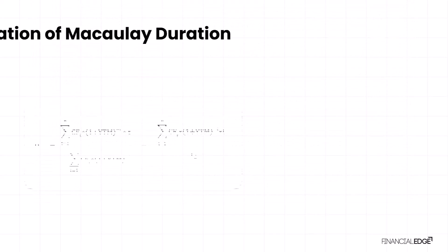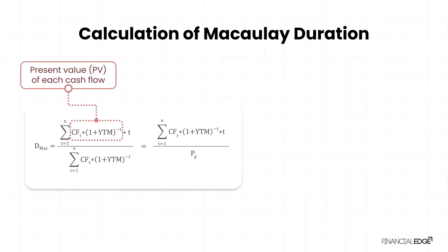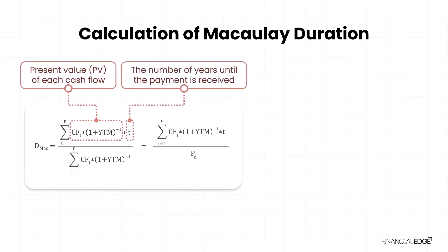As shown in the formula, Macaulay duration is calculated by multiplying the present value (PV) of each cash flow by the number of years until the payment is received. For simplicity, we'll assume annual payments throughout. If the payments are semi-annual or follow another frequency, the formula adjusts slightly, but the concepts remain the same.